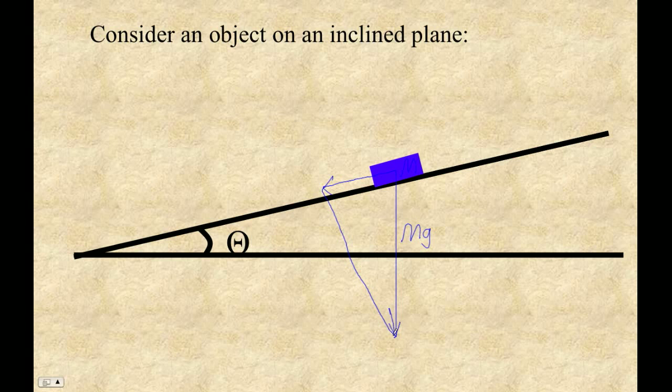Let's see if I can draw that. There's a right angle right there. This is the hypotenuse. This side here I call the parallel component.